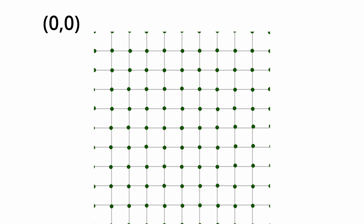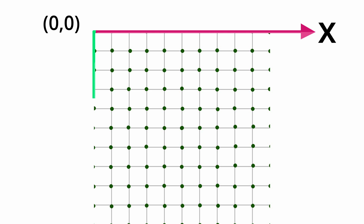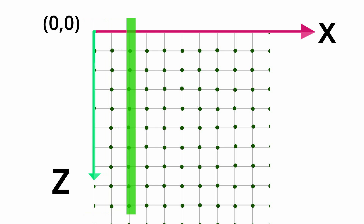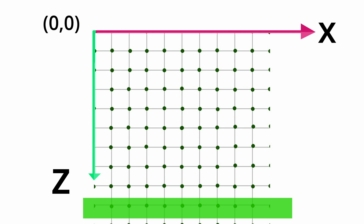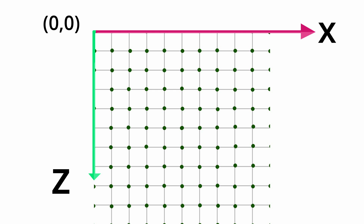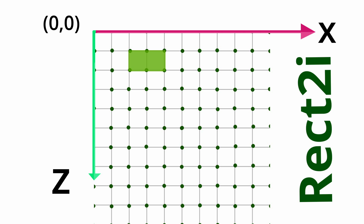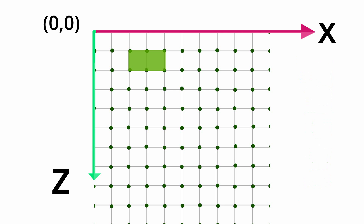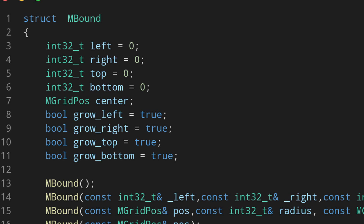Now we have all our points — what should we do? First, I try to be consistent with the Godot coordinate system. My terrain starts at zero-zero, with positive X direction and positive Z direction. This region is left, this is right, here is top, here is bottom. We need a system to specify a region in our grid — for example, a region where left is 2, right is 4, top is 1, and bottom is 3. I first thought to use Godot's Rect2i class, but I needed something more specific so I wrote a struct called MBound to hold region information.